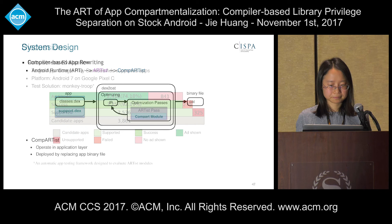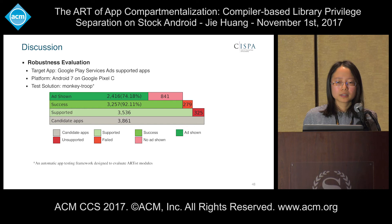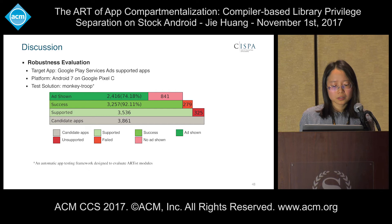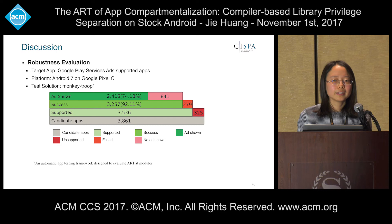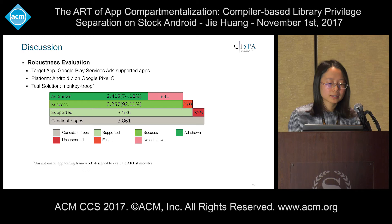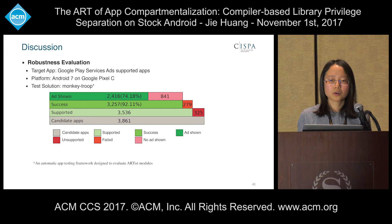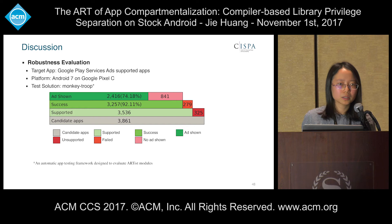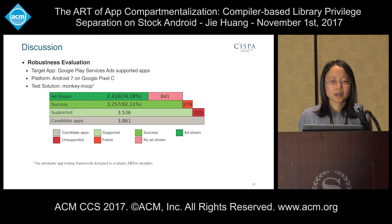After deploying our solution, we used a monkey-based app automatic testing framework called MonkeyTube to evaluate the robustness of our solution. We ran Compartist on more than 3,000 apps. The result shows that around 92% of those supported apps can still survive the automatic test after deployment, indicating the robustness of our solution. Among all those successful apps, around 74% triggered advertisement calls during testing. To find out why the rest didn't trigger advertisement calls, we tested several manually and discovered that some apps need log-in or clicking a specific button to reach advertisement calls — this low hit rate is a common problem that all automatic random testing tools suffer from.